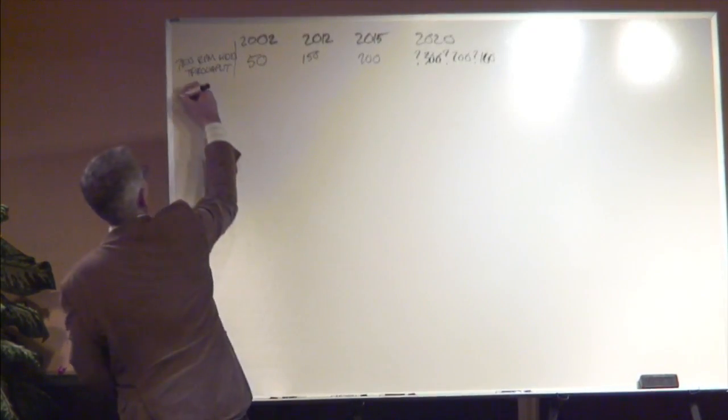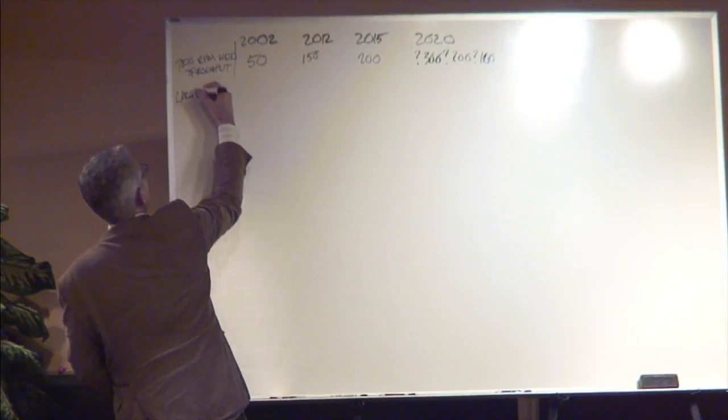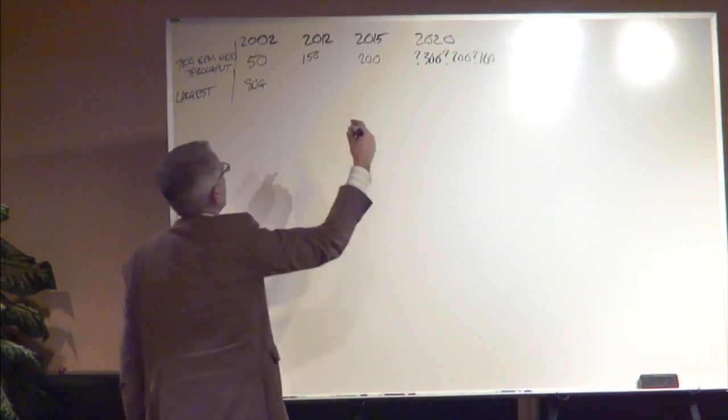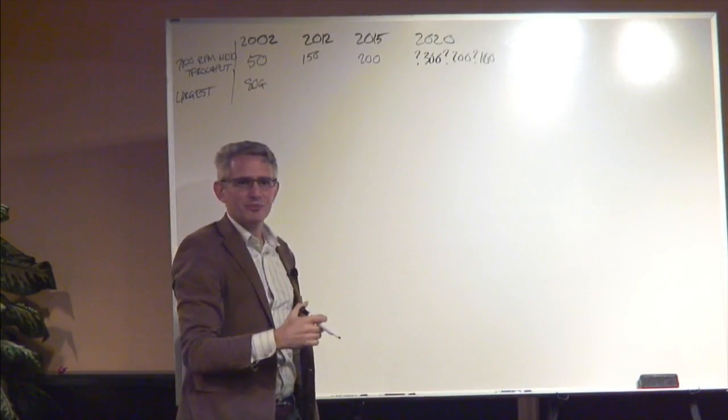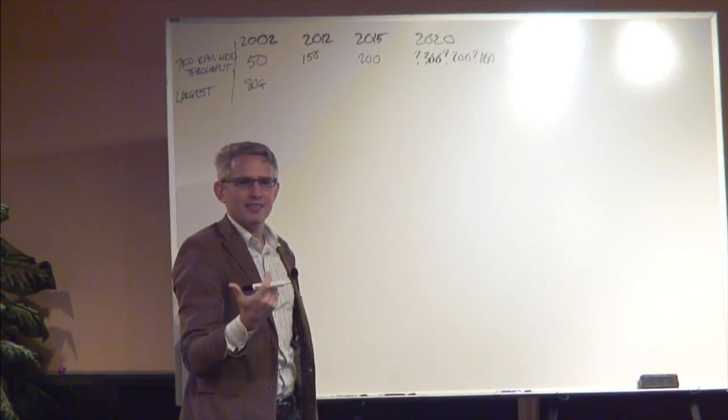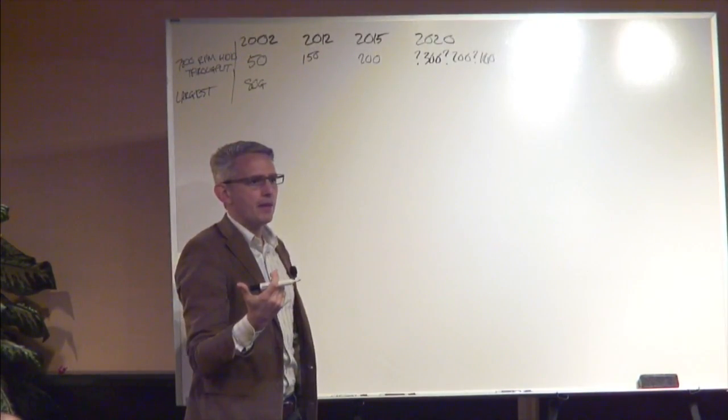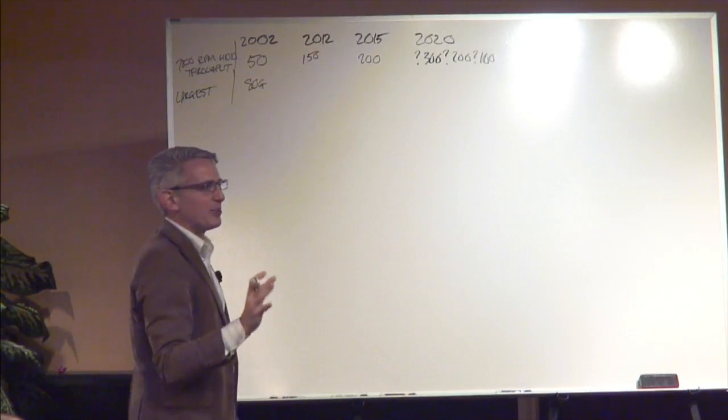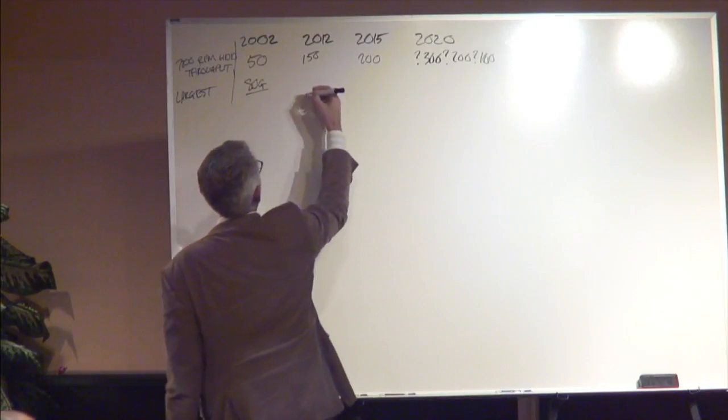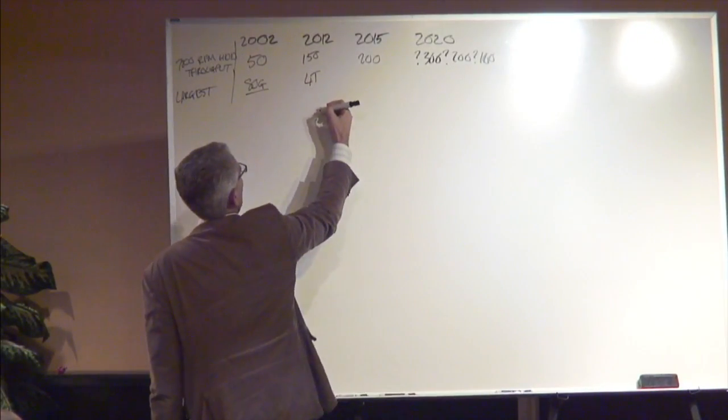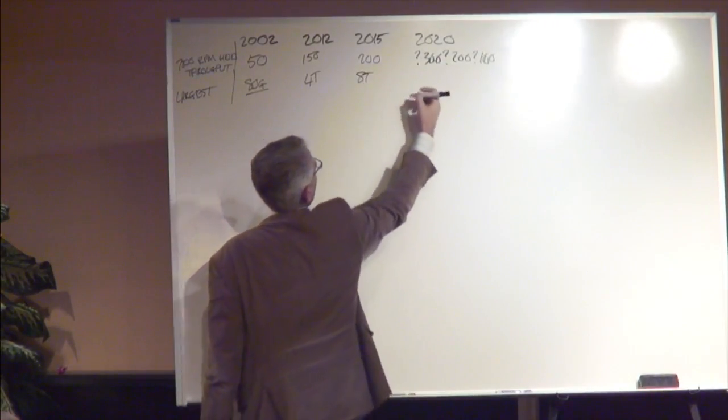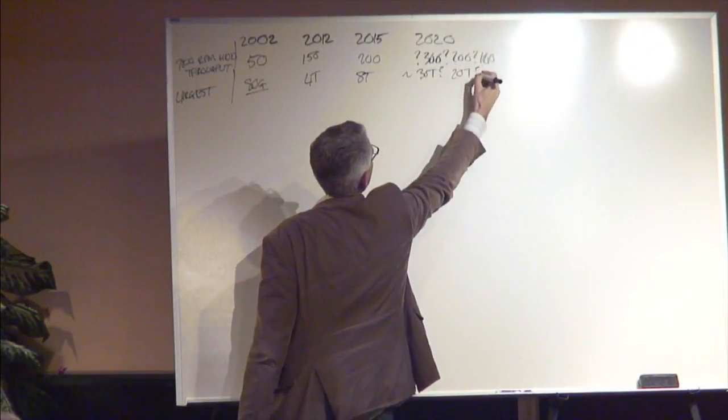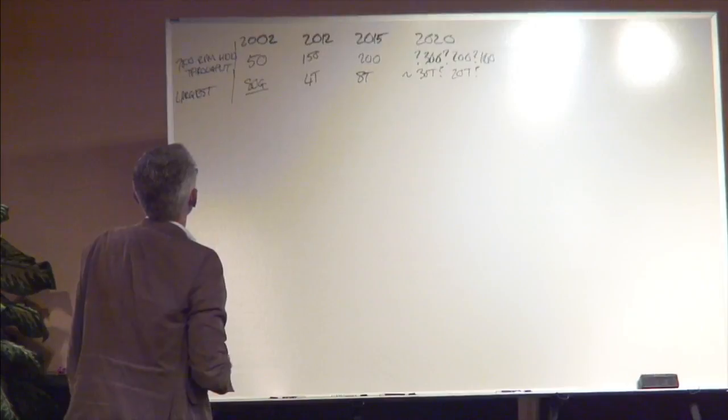The largest HDD you could get in 2002, I'm going to say 80 gigs. Four terabytes was the biggest in 2012, eight terabytes now, and what's this going to be? Who knows, maybe 30, 20, maybe 20 terabytes in 2020.